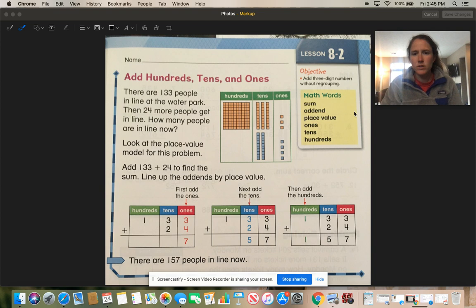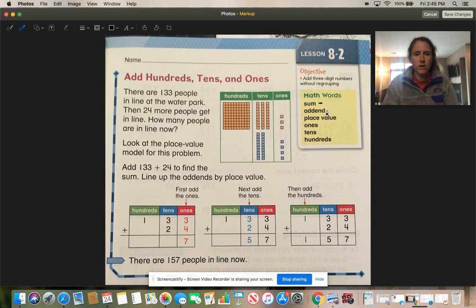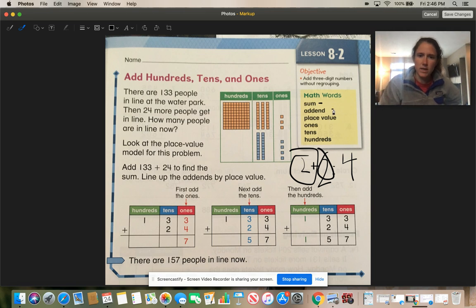So let's go over our math words on the side. It says sum. We should all know what a sum is. The sum is an answer to an addition problem. An addend is one of the two numbers you're adding together to get your sum. So for example 2 plus 2 equals 4. The two addends are this number and this number, the numbers you're adding together. Place value - we already know what place value means. Each number has its place value based on where it is in the number: ones, tens, and hundreds.